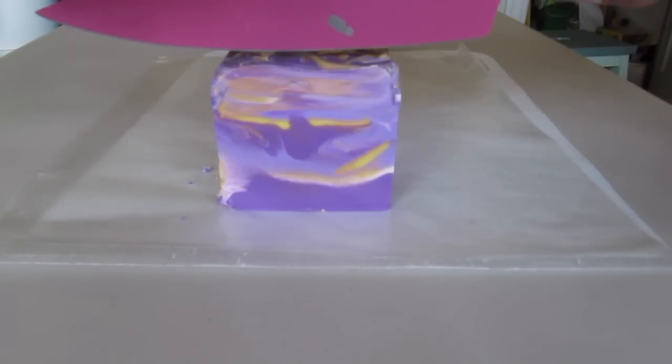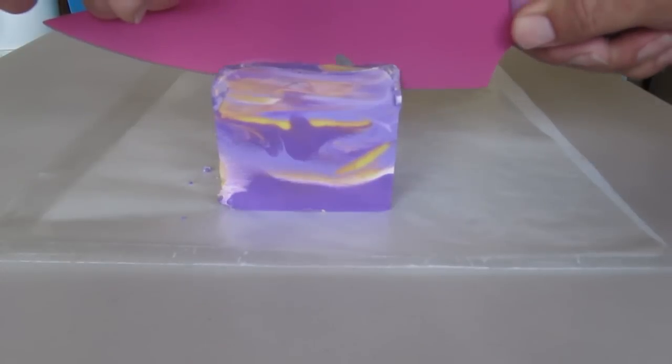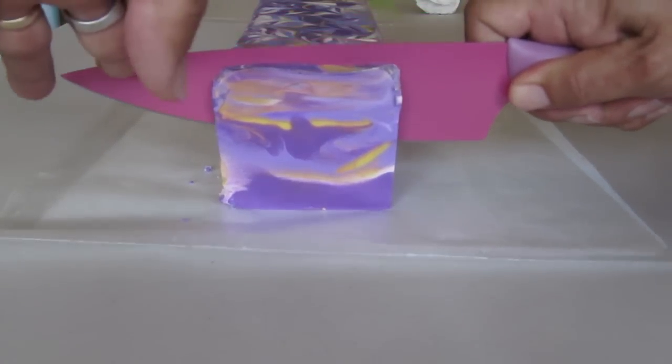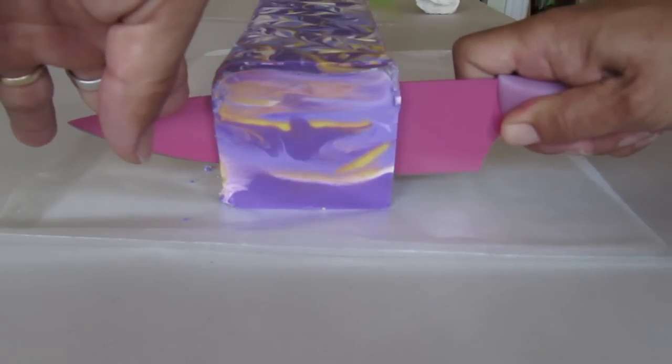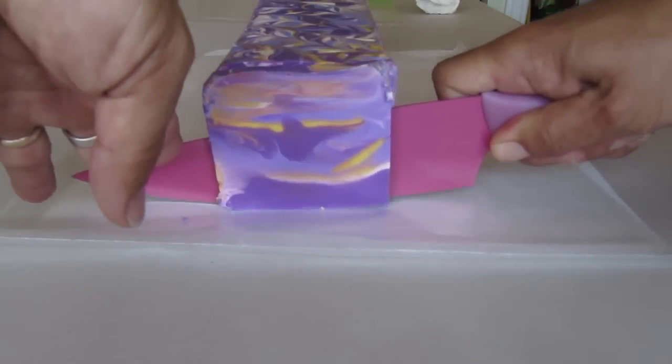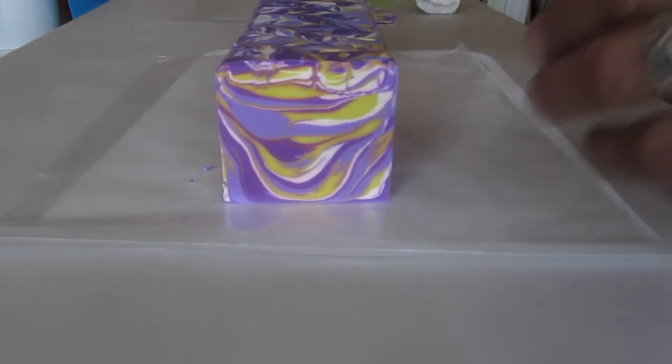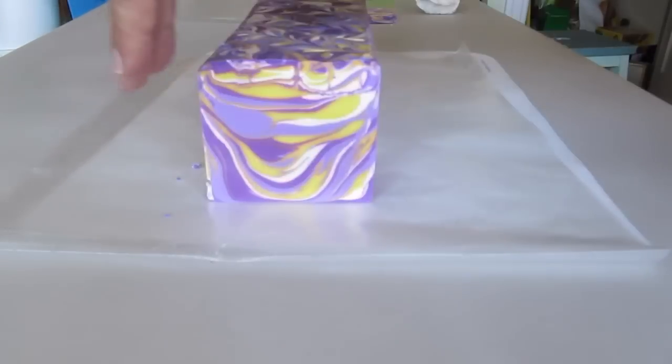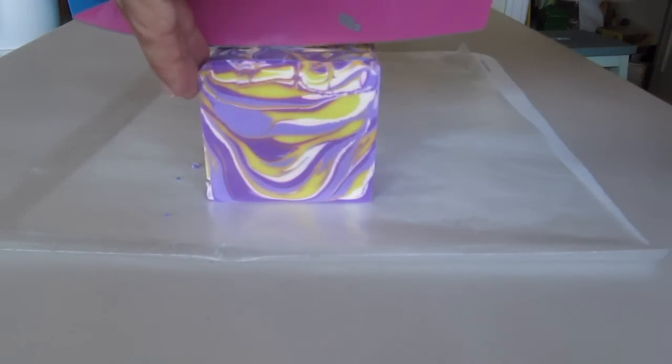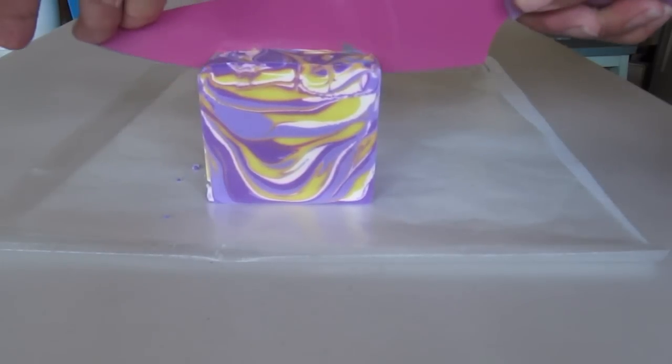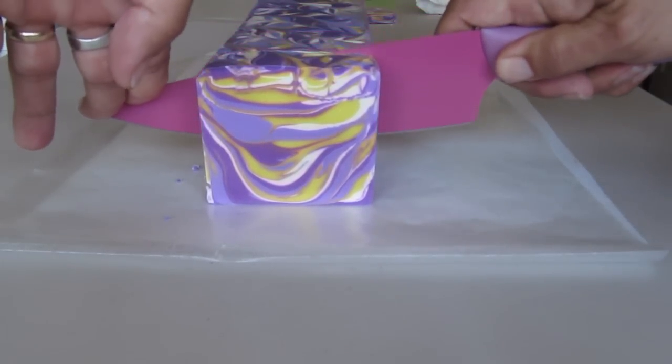All right, let's cut into this. See what we got. Smells awfully good. Oh, I like that. So again, I added the white because the yellow and purple are opposites, and it's quite a contrast. So I used the white to soften that contrast just a little bit. Also brightens up the soap.